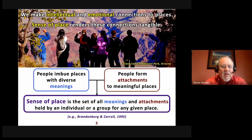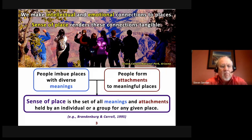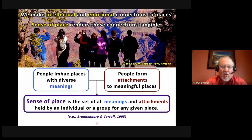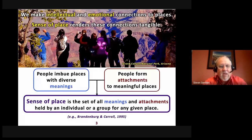People imbue places with diverse meanings — the intellectual knowledge you form in a place. At the same time, we form attachments to meaningful places. If we combine that set of meanings with that set of attachments, we have what's called sense of place. Geographers define sense of place as the set of all meanings and attachments held by an individual or a group for any given place.